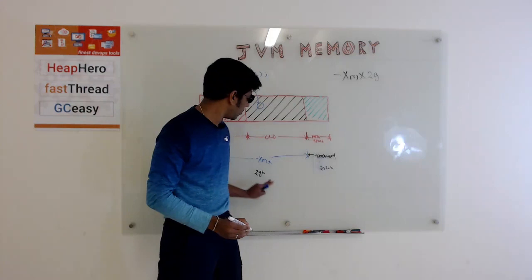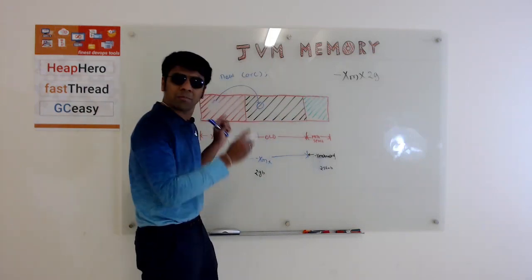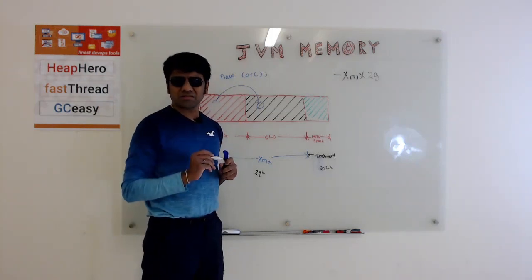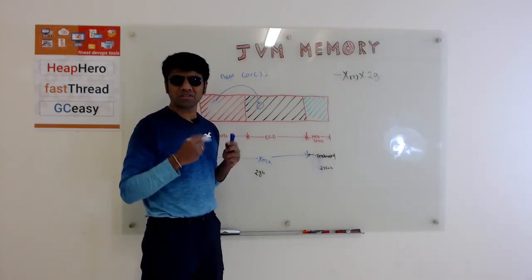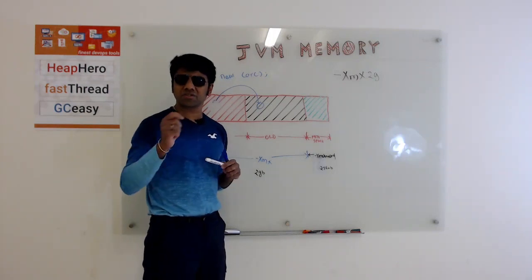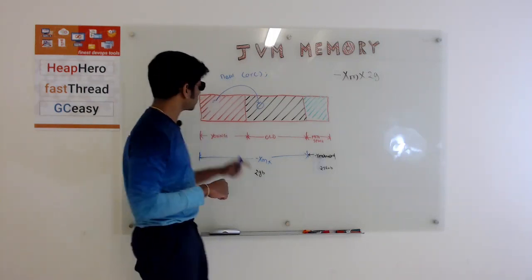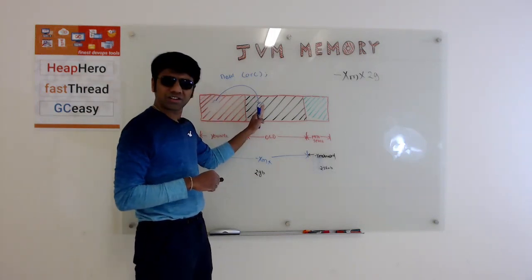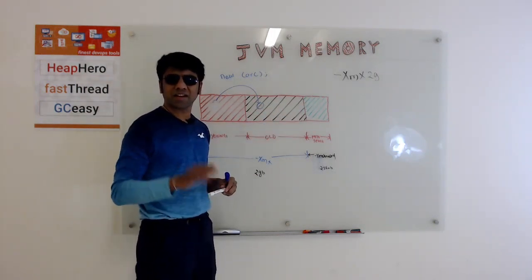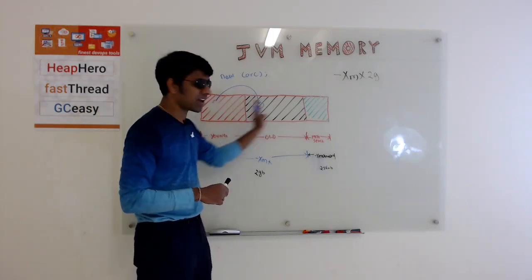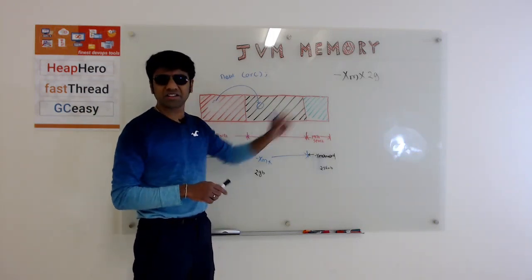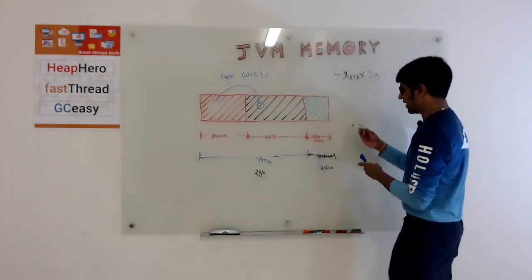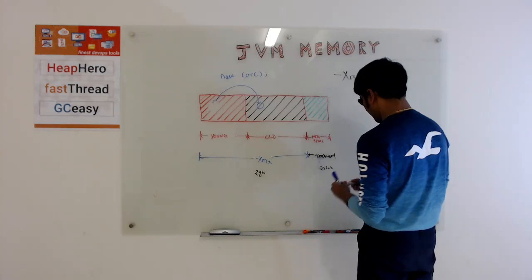But it doesn't stop there. Java application creates a lot of threads to process the incoming requests. Where are the threads stored? Are they stored in the young generation, or are they stored in the old generation, or in the metaspace? The answer is they are not stored anywhere in these three regions. They are stored outside. There is this additional space called others.